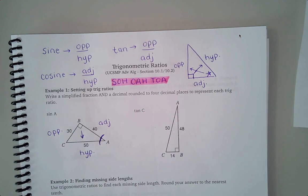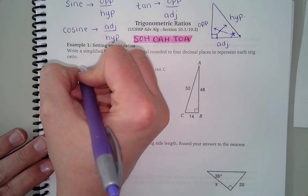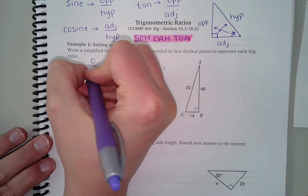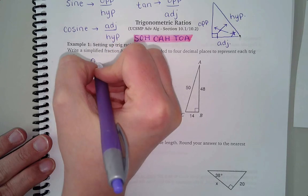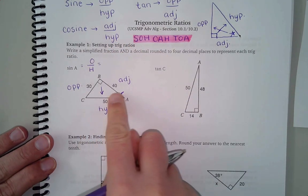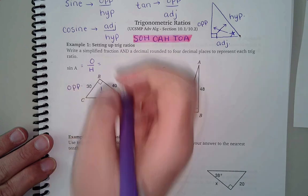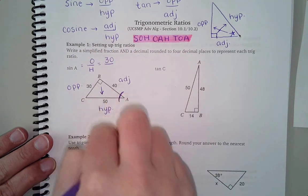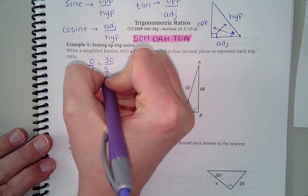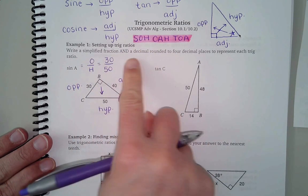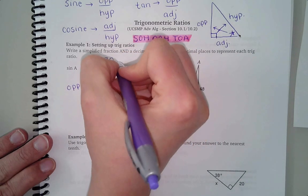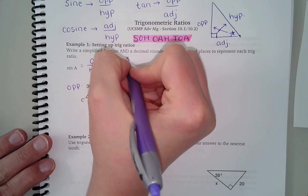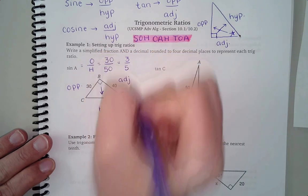Okay, so when I want sine a, that's opposite over hypotenuse, so I would set that up as opposite is 30, hypotenuse is 50, and then it should just say simplified fraction so I would want to make that three-fifths. Okay, that's the first part of my answer.